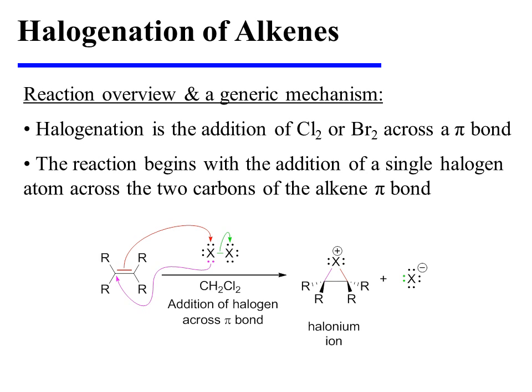Halogenation is the addition of chlorine or bromine across an alkene pi bond. The reaction begins with the addition of a single halogen atom across the two carbons of the alkene pi bond to form an intermediate known as the halonium ion.